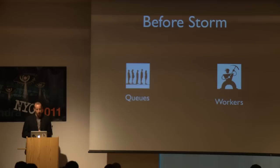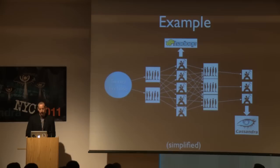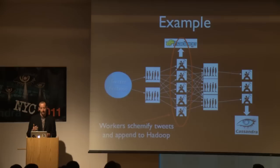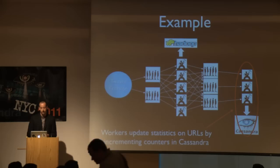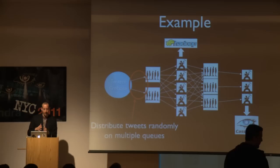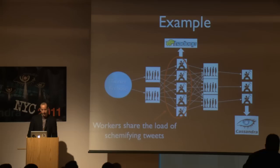First, I want to talk about what we did before we had Storm — how did we do real-time computation before Storm? Like many people, we used the queues and workers paradigm. Our architecture used to look something like this: we were doing some analytics on the Twitter Firehose — we'd read the firehose, take all the tweets, put them onto a cluster of queue servers. Then we had a set of workers that would read those tweets, schemify them, append them to Hadoop, and send them off to another set of queues for further processing.